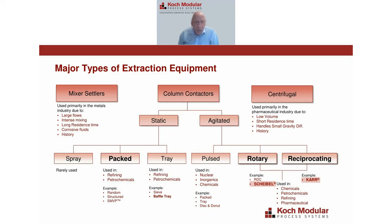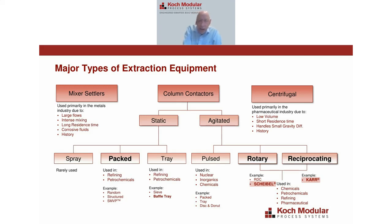There are basically three types of extraction equipment: mixer-settlers, which can be batch or continuous; column-type contactors, which can be static or agitated — we'll focus on packed, rotating, and reciprocating columns; and centrifugal extractors, which are high-speed devices that force phases to flow counter-currently. Each type has its pluses and minuses.